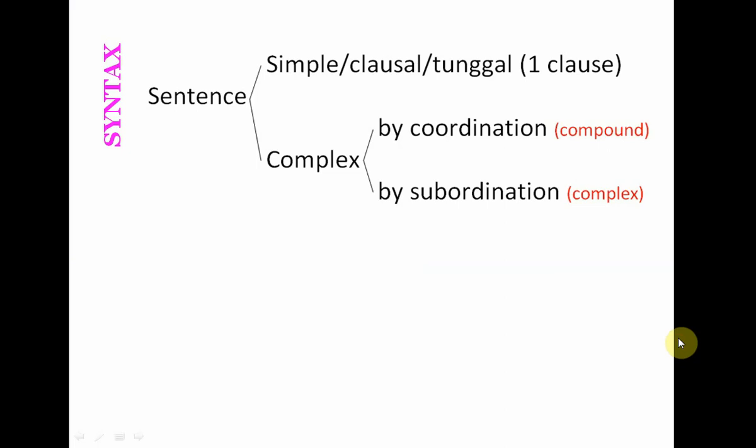In traditional grammar, a sentence is something that has a subject and a verb. We usually divide it into three things: the simple sentence, which has only one subject and one verb; the compound sentence, which has more than two clauses; and the complex sentence. The difference is that a compound sentence is combined by a coordinating conjunction — like 'and,' 'but,' or 'or' — to combine two different clauses.